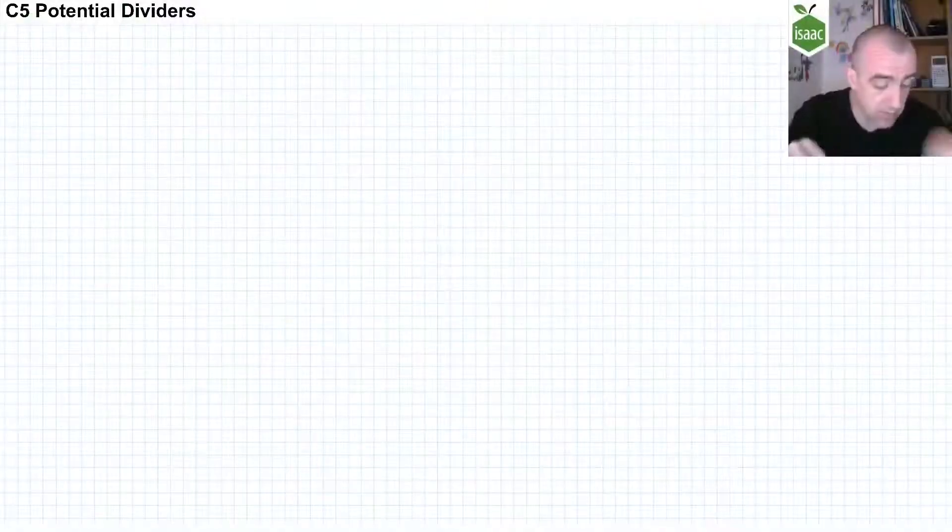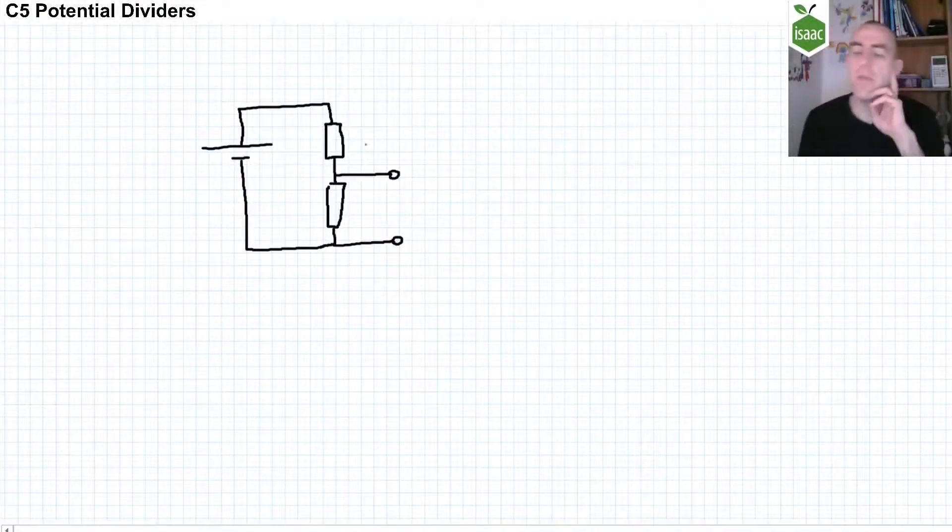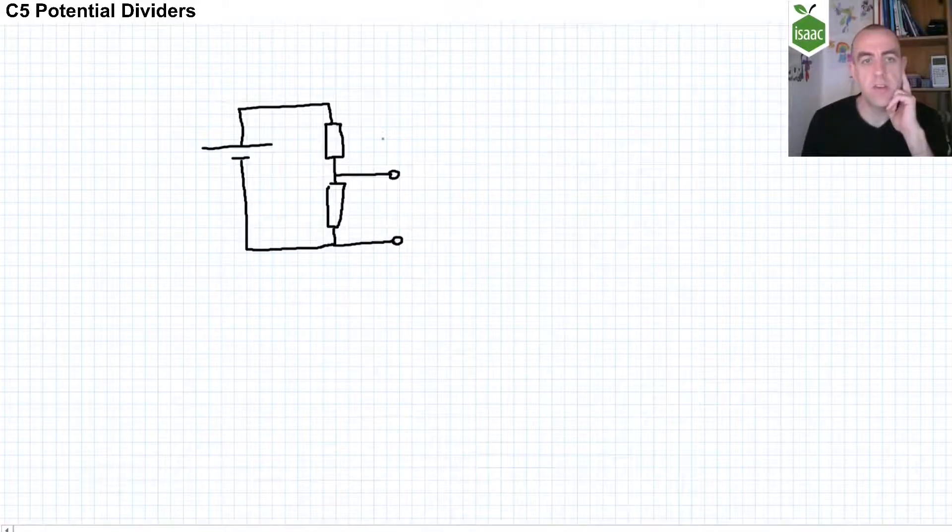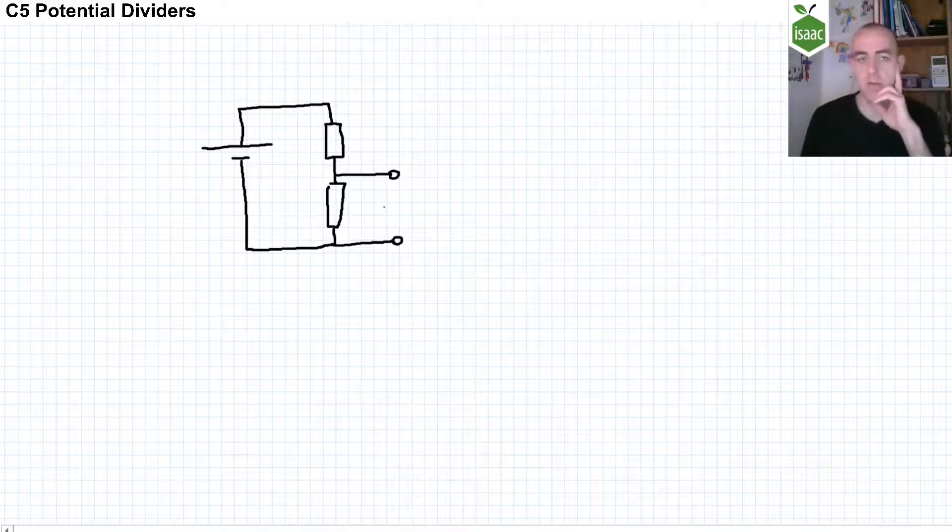This video is about C5 potential dividers and it follows very naturally from the previous video, C4, about Kirchhoff's laws. A potential divider is an arrangement of resistors where we can tap off some of the potential parallel to one of those components.